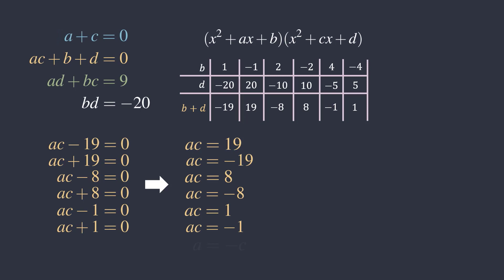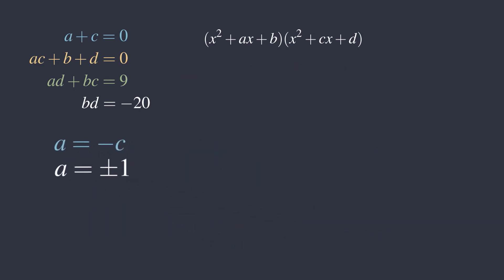From equation 1, we also know that a equals negative c. So a times c becomes negative a squared. Since a is an integer, negative a squared cannot be equal to 19, negative 19, 8, negative 8, or 1. So a squared must be 1, which means a can only be 1 or negative 1.